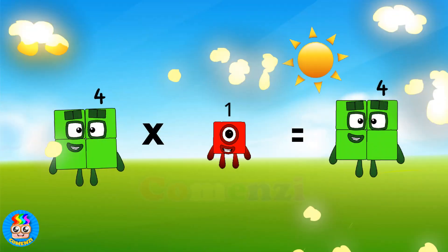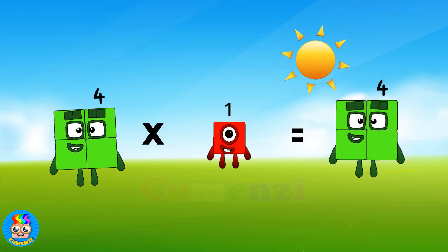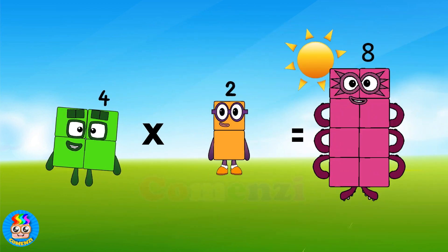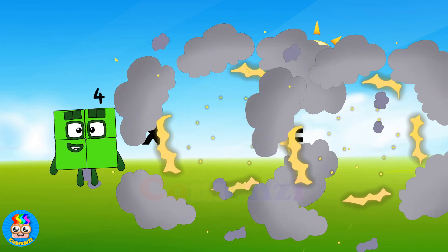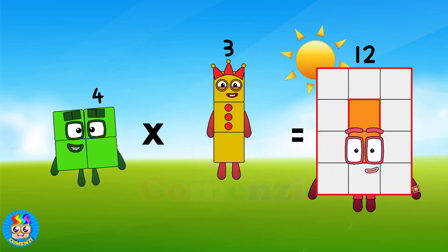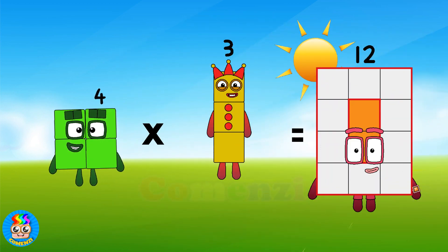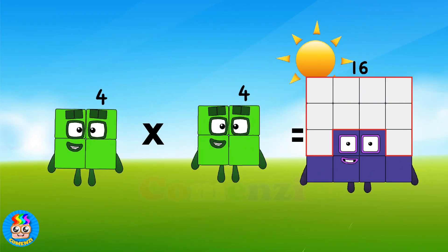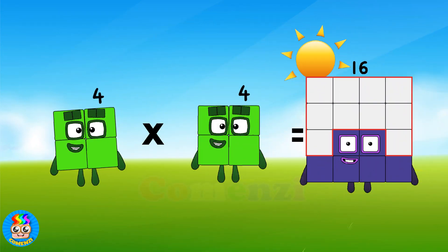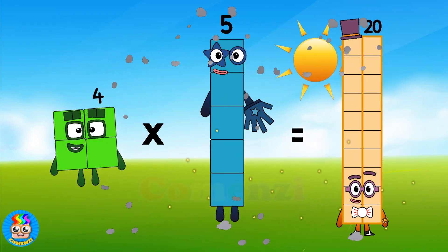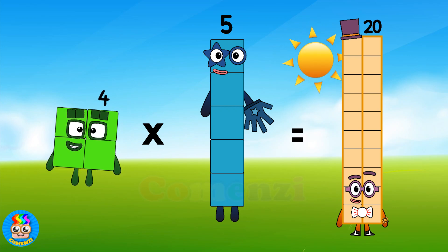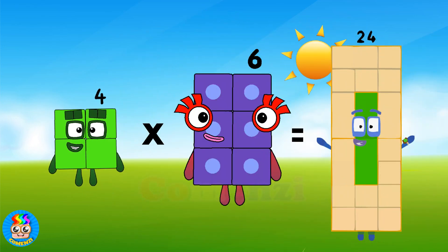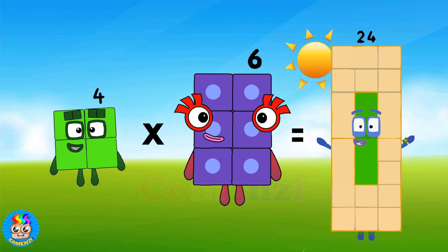Four times one is four. Four times two is eight. Four times three is twelve. Four times four is sixteen. Four times five is twenty. Four times six is twenty-four.